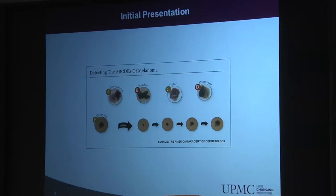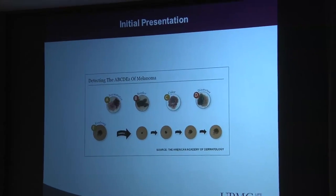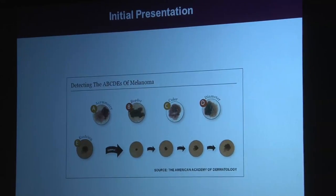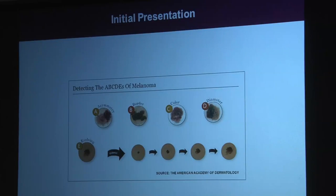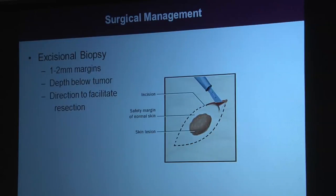Depending on the features — asymmetry, border irregularity, color changes, or diameter — this is what tends to bring you to a medical professional for evaluation, or a medical professional decides this is what to biopsy. Dr. Ferris went over those very nicely. So we need tissue. Oftentimes, either in your primary care physician's or dermatologist's office, they will biopsy the lesion.